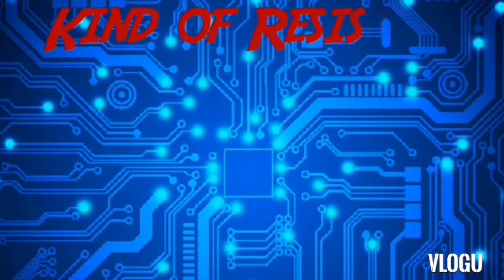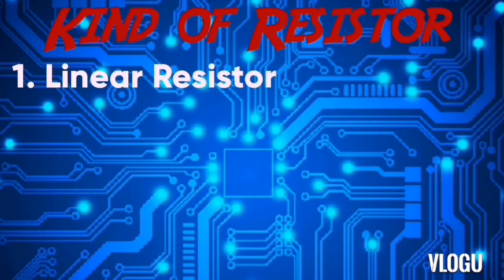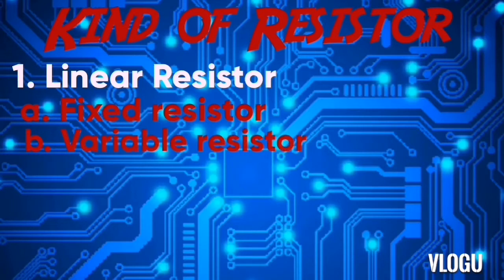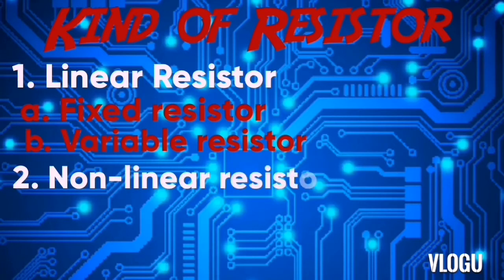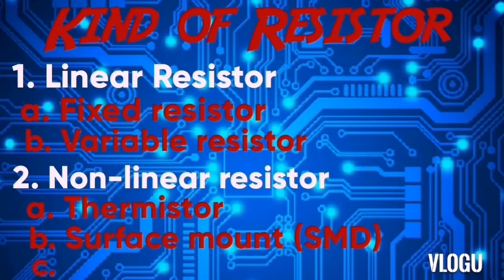We have different kinds of resistors. 1. Linear resistor — types of linear resistor include fixed resistor and variable resistor. 2. Non-linear resistor — types of non-linear resistor include: 3. Thermistor. 4. Surface mount or SMD. 5. Varistor resistor and photoresistor or LDR.